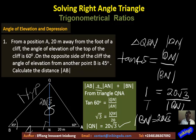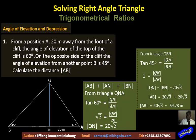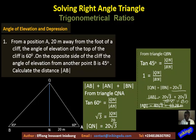Therefore, to obtain AB, we add BN to AN: AB = BN + AN = 20√3 + 20. Please note there is a mistake on screen — correct it on your side. The answer is 20√3 + 20.